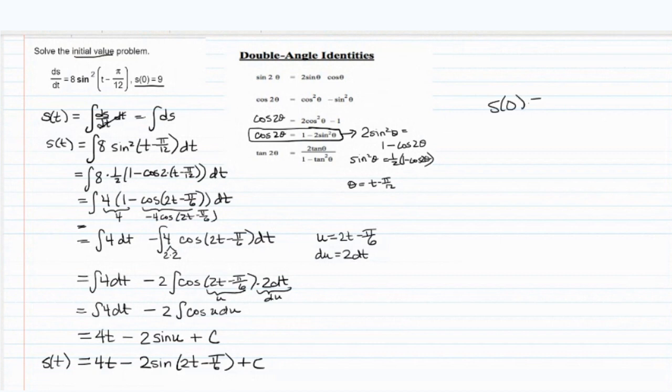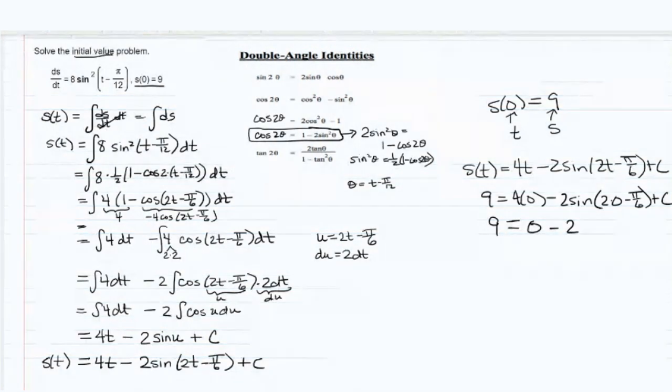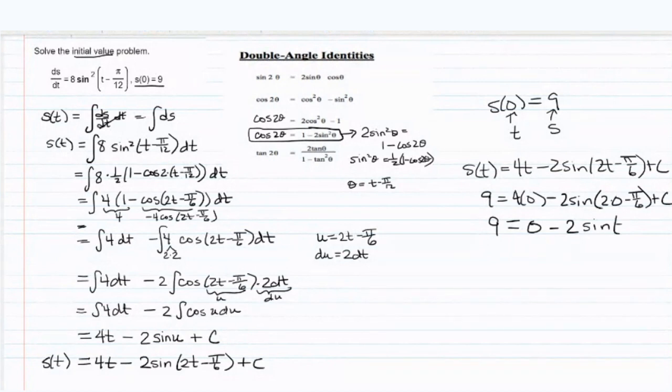So the next thing we do is use that initial value, and to say that s of 0 is equal to 9 means that when t is 0, s is equal to 9. So we're going to plug those values into our functions. We're going to have 9 equals 4 times 0 minus 2 times the sine of 2 times 0 minus pi over 6 plus c.